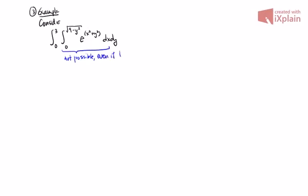So second example. Again, let's begin with an integral. This one will go from 0 to 3, from 0 to the square root of 9 minus y squared, e to the power of x squared plus y squared, and then dx dy. So if you look at this guy, if you look at the inner integral, again, this is still not possible. And interestingly, even if it were dy first, it wouldn't be possible.